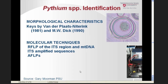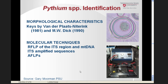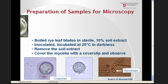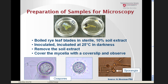Similar molecular and morphological approaches are used to identify Pythium. Gary Moorman uses an approach where he boils rye leaf blades, places them in sterile distilled water with an agar plug, incubates for a period of time, removes the soil extract, and then observes mycelium, oospores, and sporangia with cover slips. This is a good way to obtain good sporulation for Pythiums.